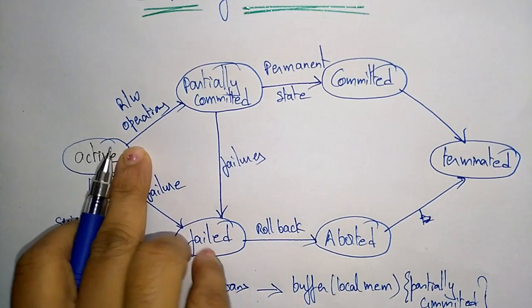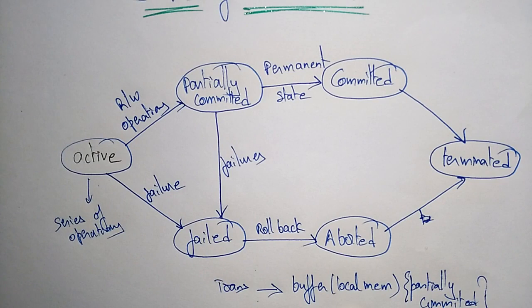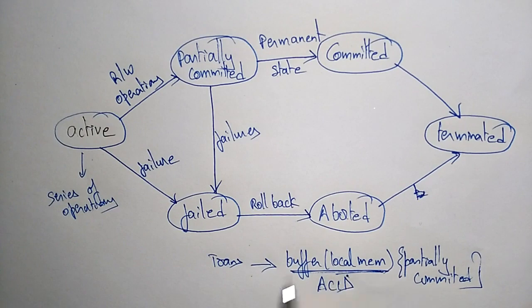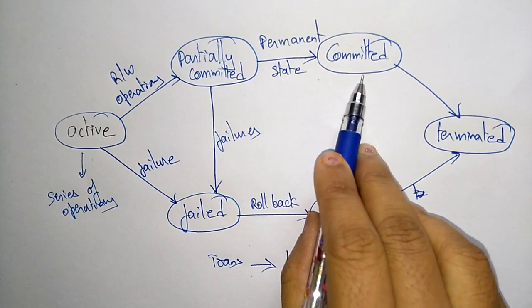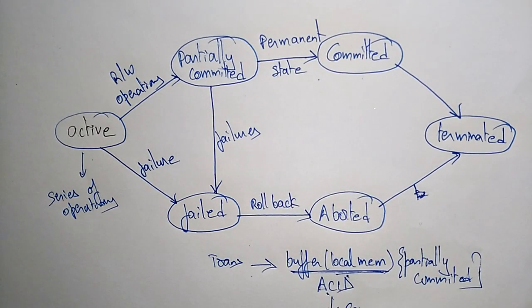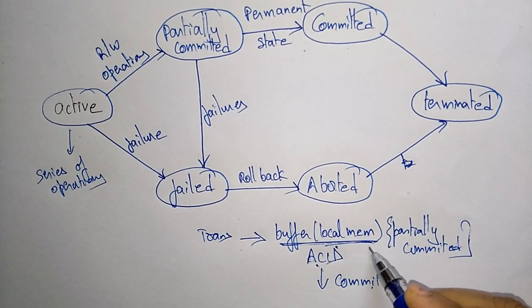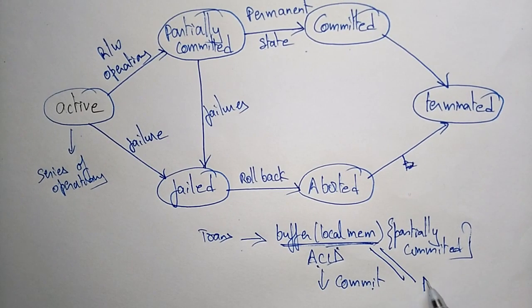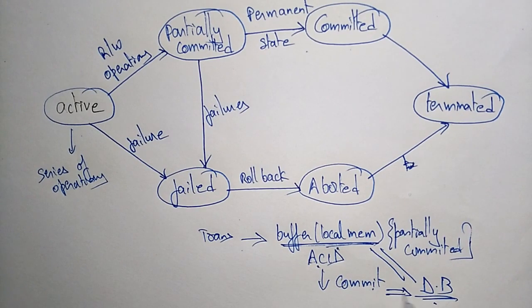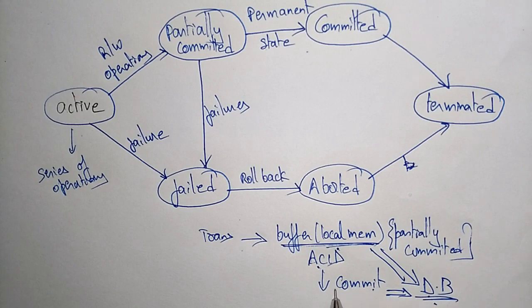This stage is called partially committed — you are not storing completely in the database yet. After the completion of operations, it checks if everything is satisfying the ACID properties. If all the transactions satisfy the ACID properties, then it makes that state permanent using the commit statement. Whenever you use the commit statement, the values stored temporarily in the local buffer are moved to the main database.